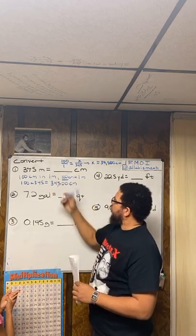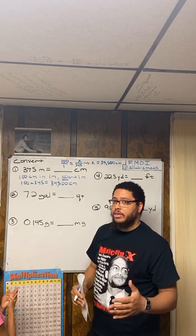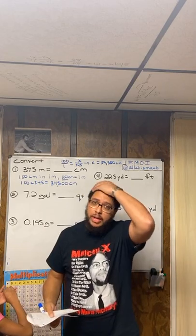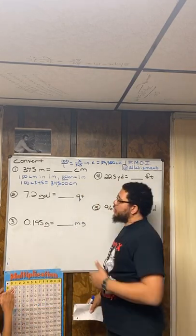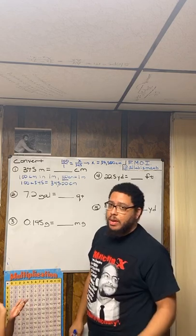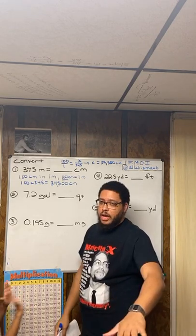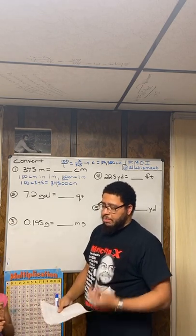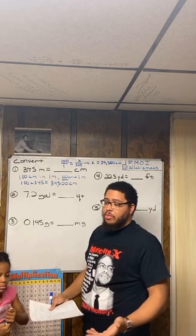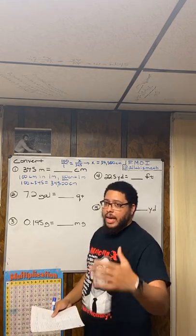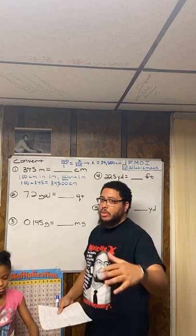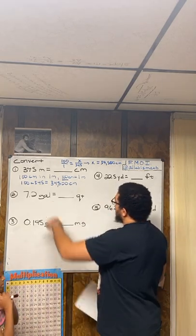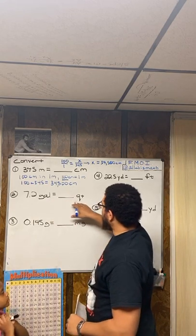You have to start with some type of chart or reference — that's the conversion factor. You have to know what's equal to what. You can memorize these over time, or just have them written down on a piece of paper. Personally, I don't have all conversions memorized, but I know how to find them and how to use them once I find them. Now let's look at number two: 7.2 gallons equals how many quarts?